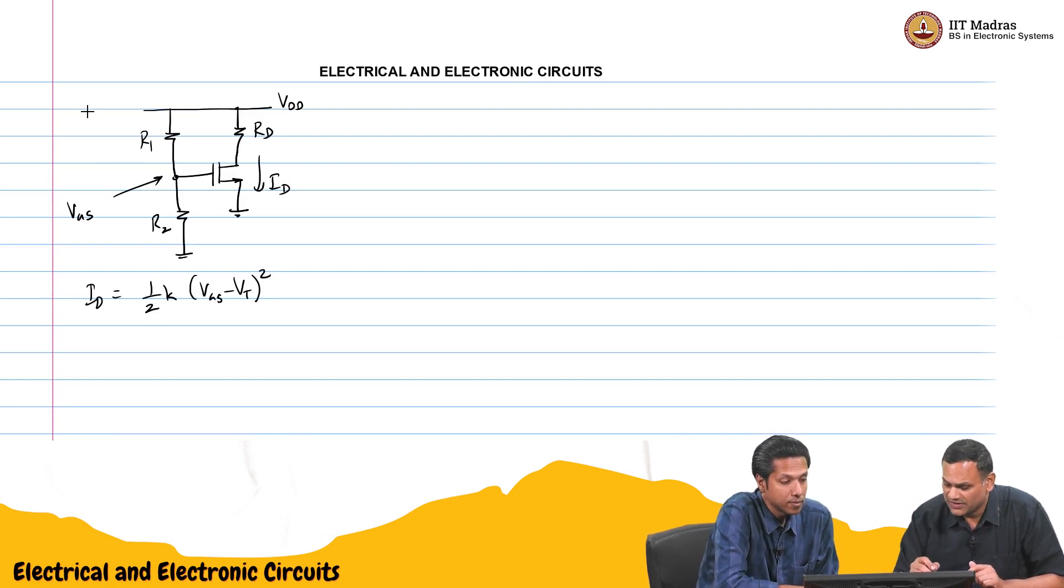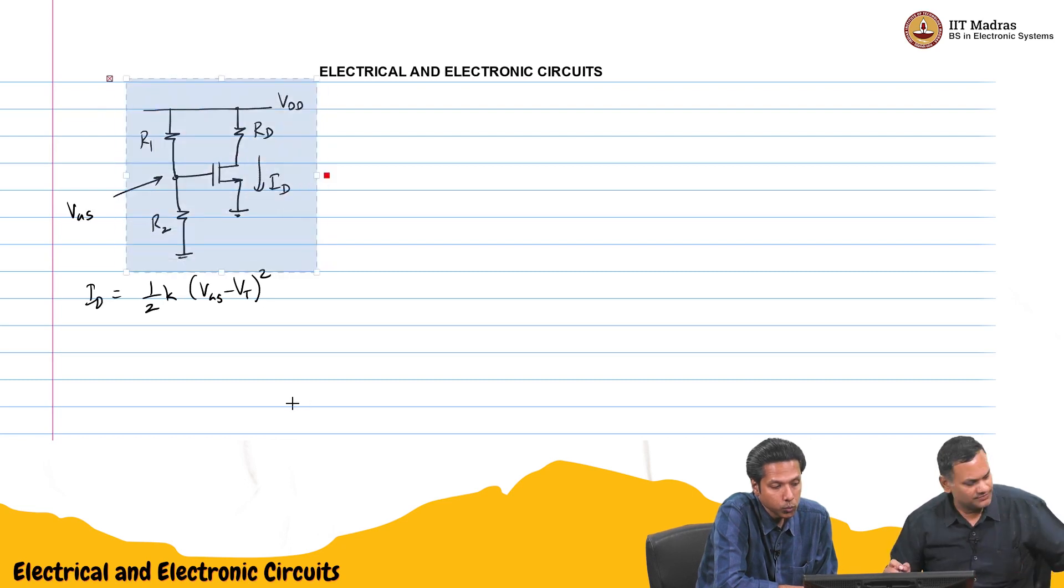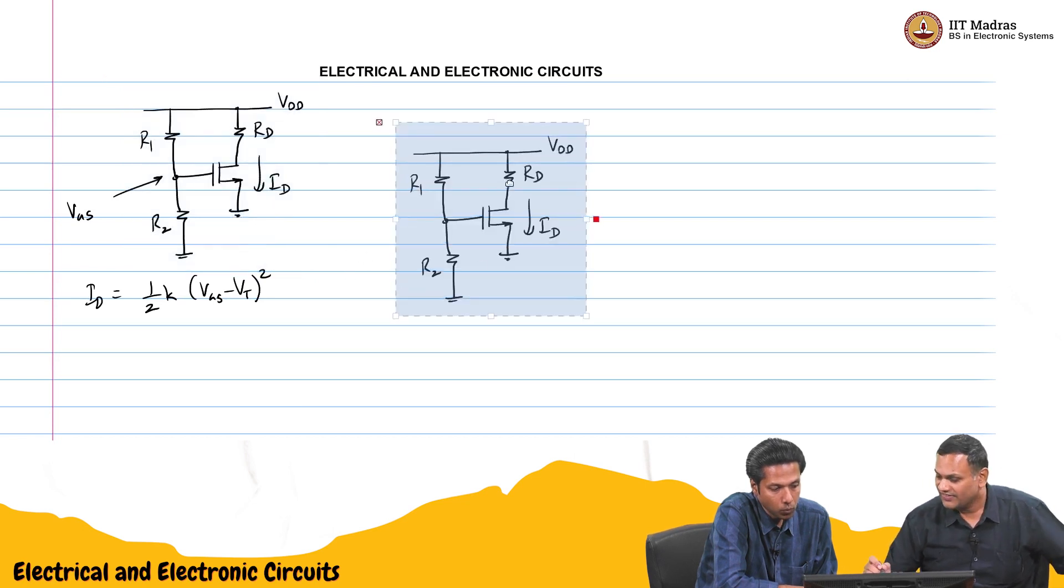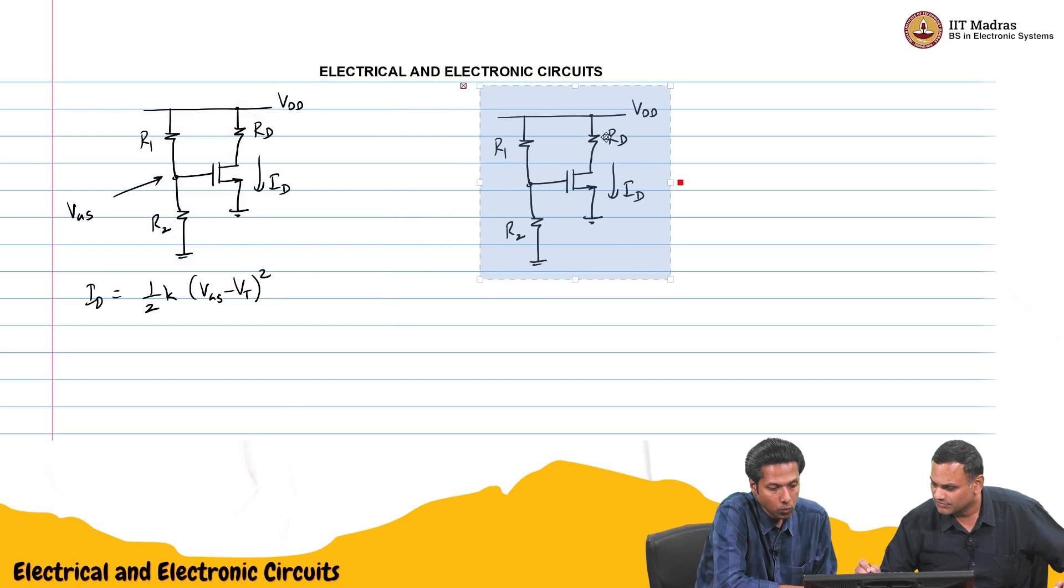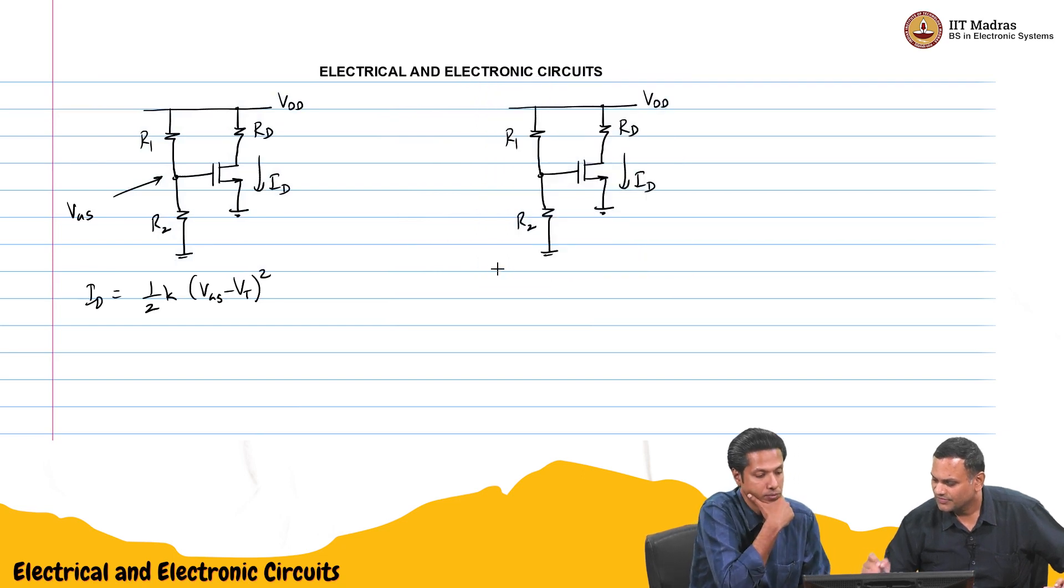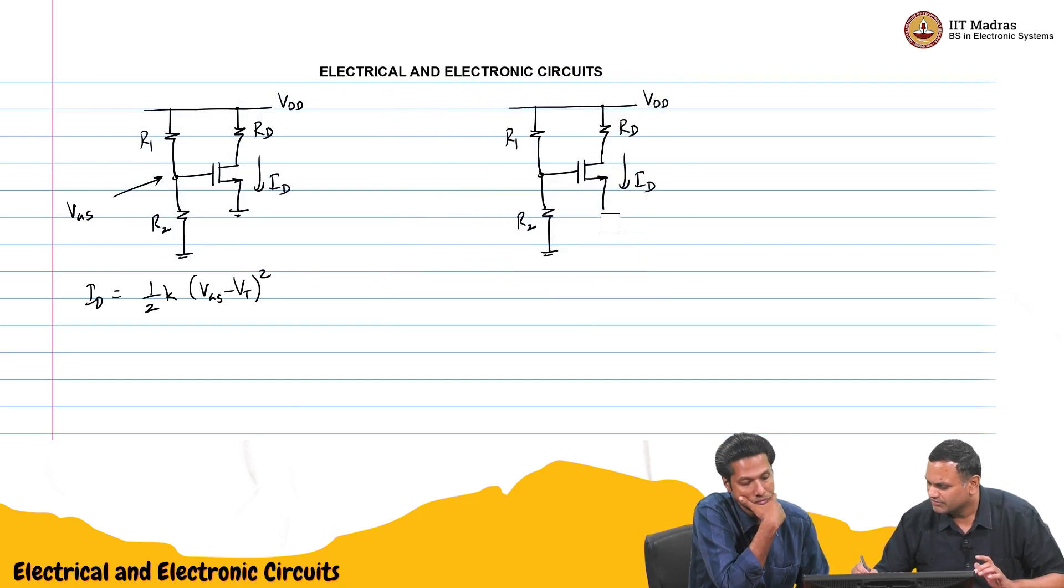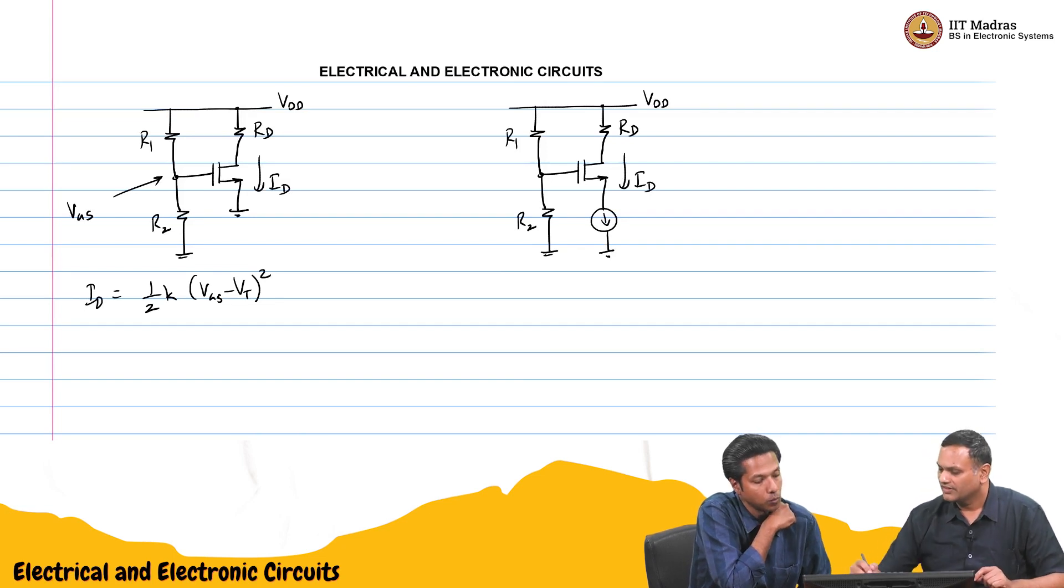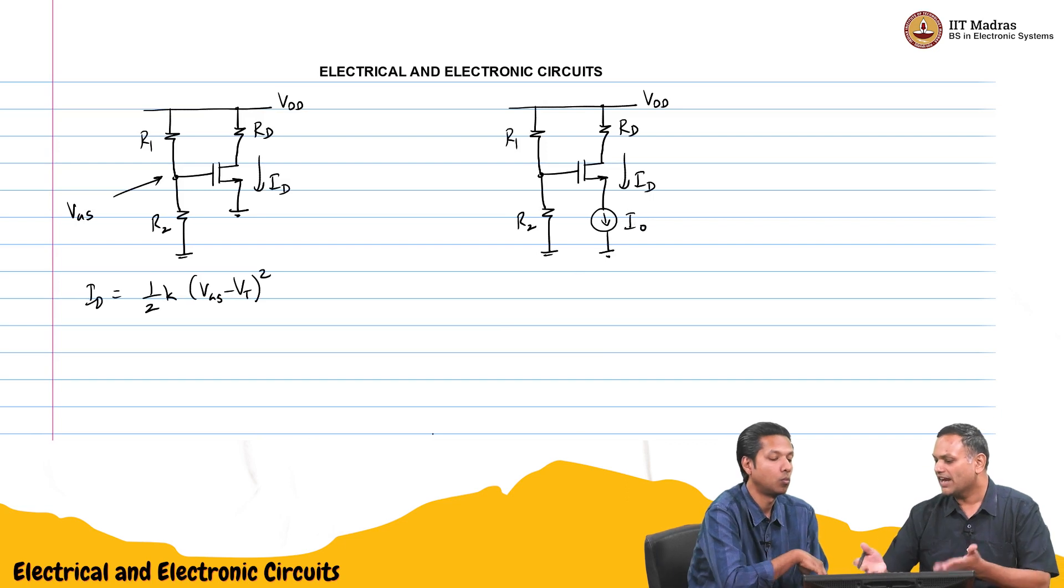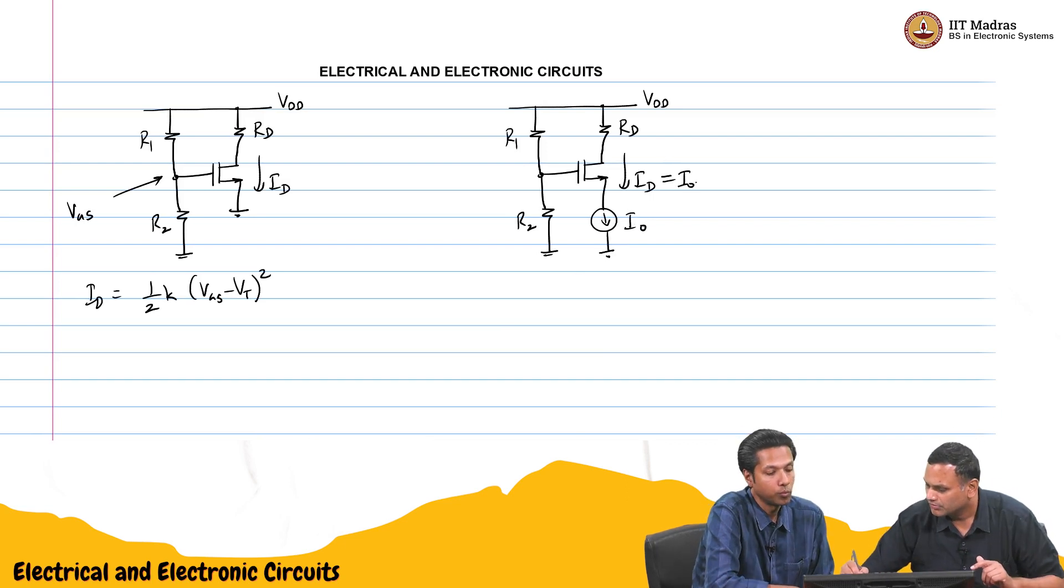Now, one variant of this which we saw in the BJT. We had RE and we replaced that with a current source. We can do the same thing here actually. We do not need a resistance. But we can fix the current using an ideal current source. This could be some I naught. You want Id equal to I naught, you will fix the current.